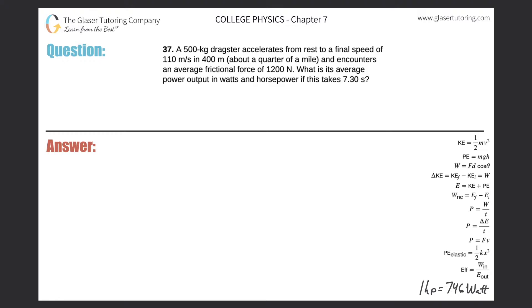Number 37: A 500 kilogram dragster accelerates from rest to a final speed of 110 meters per second in 400 meters, which is about a quarter of a mile.